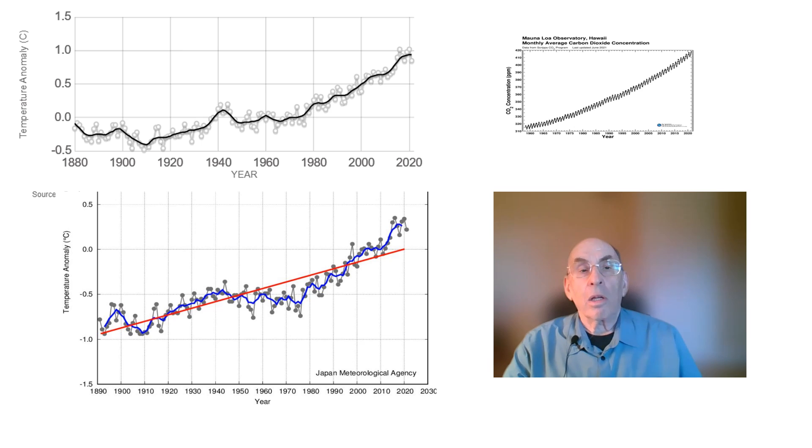The longest more or less flat spot in both data sets occurred from about 1950 to 1975. This was a period of rapid electrification in countries across the globe. Coal-fired power plants proliferated to provide this new electricity, and in doing so, these coal-fired power plants spewed enormous amounts of sulfur dioxide into the atmosphere.